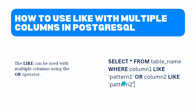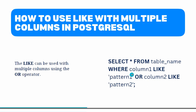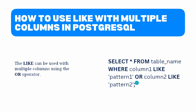Look at the syntax — after the WHERE clause, we have used column_one LIKE pattern_one, then combined one more condition using the OR operator: column_two LIKE pattern_two. Basically in this syntax, we are using the LIKE operator to search for a specific pattern in multiple columns of a table. We use the OR operator to combine multiple conditions, with each condition checking for a pattern in a different column.